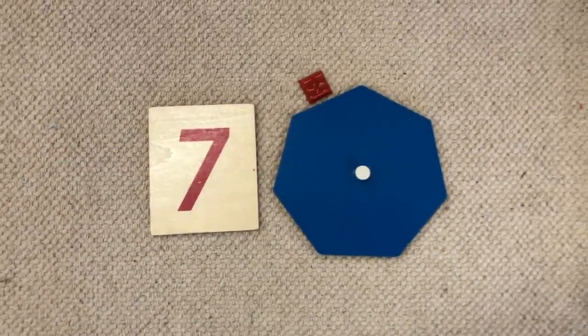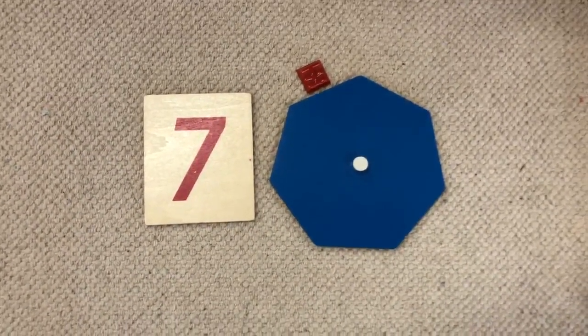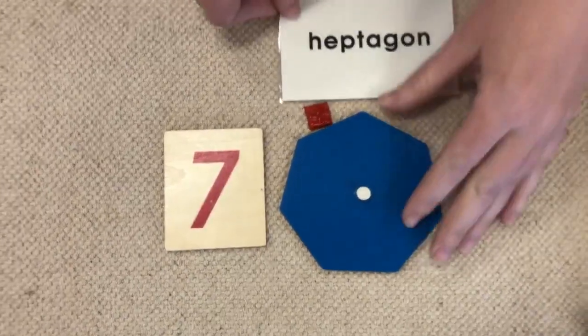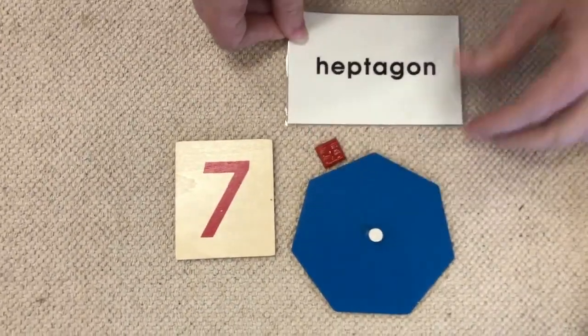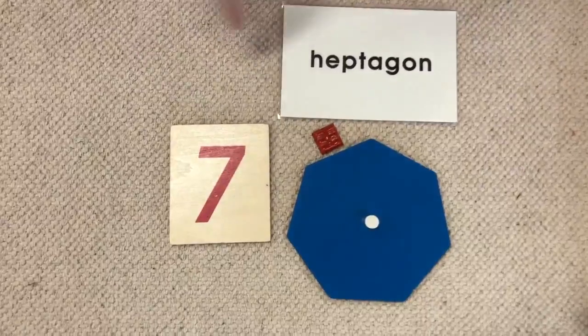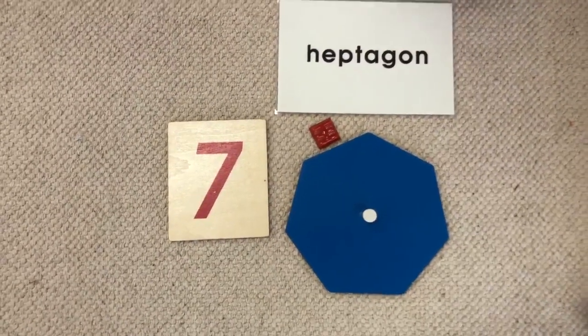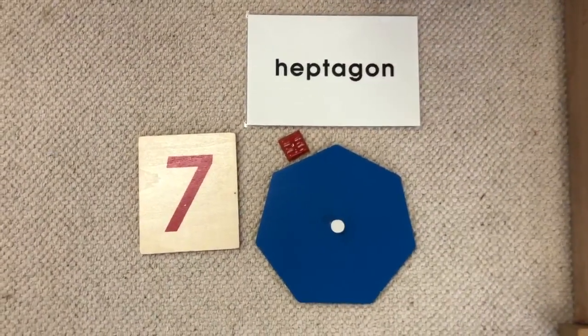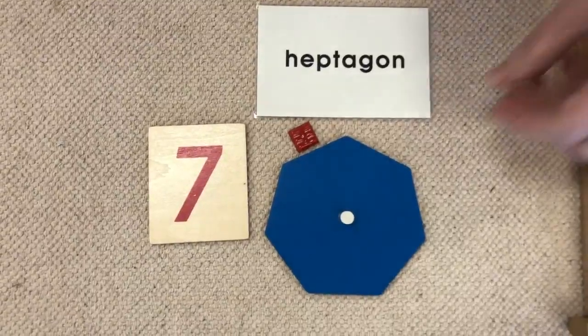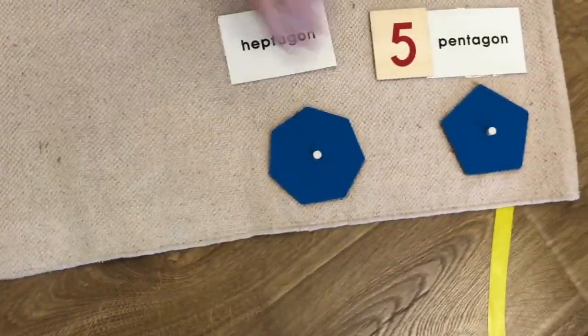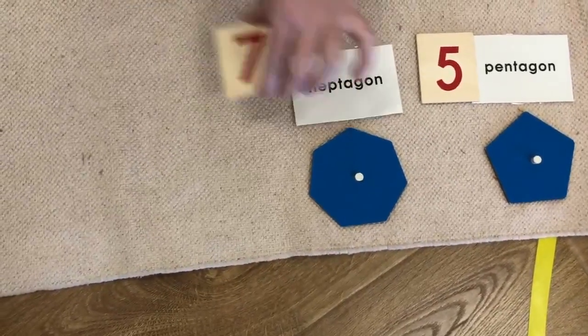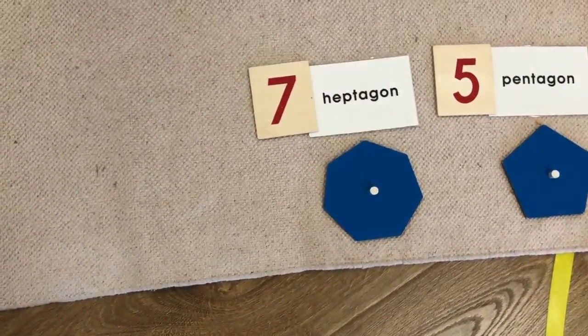A seven-sided polygon has a super funny word. It's called, let me slide it down for you. It's called a heptagon. Heptagon. Isn't that funny? Heptagon. I'll put the heptagon down here with his heptagon label. Seven sides.